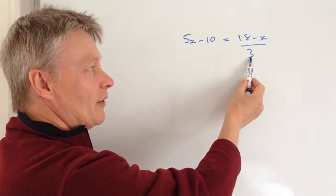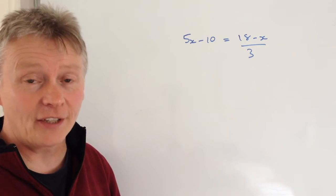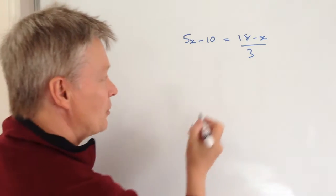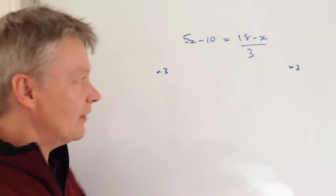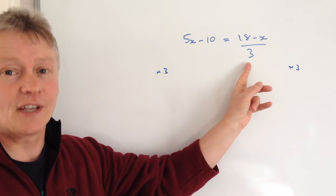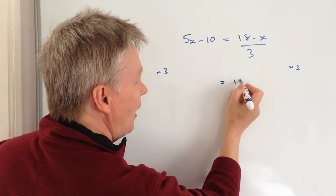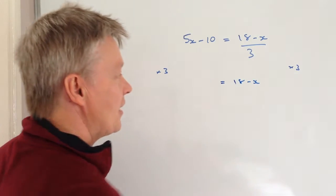So the first thing is we've got to get rid of this denominator of 3, and the way I'm going to do that is I'm going to multiply both sides by 3, because if I do that it means I can lose this denominator, and on the right-hand side I end up with 18 minus x.